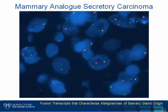This image shows disruption of the ETV6 gene in a case of mammary analog secretory carcinoma of salivary glands. Intact ETV6 genes are represented by red and green signals that are immediately adjacent to one another, occasionally appearing as yellow or fused signals. Disrupted ETV6 genes are represented by red and green signals that are significantly separated from one another.